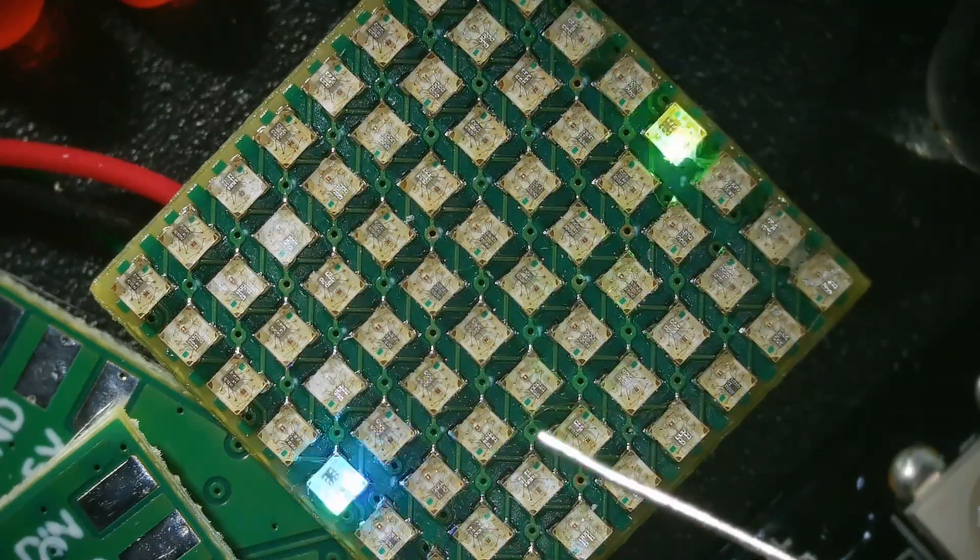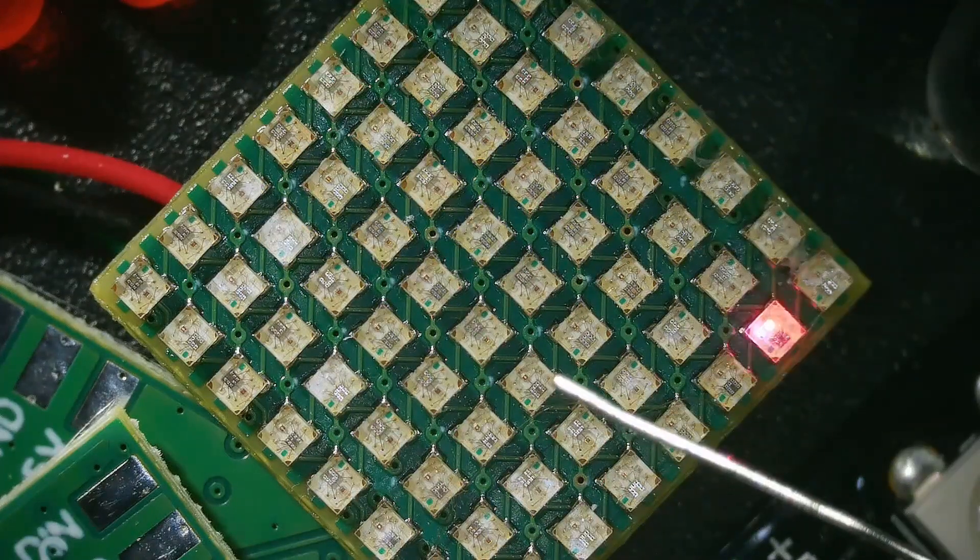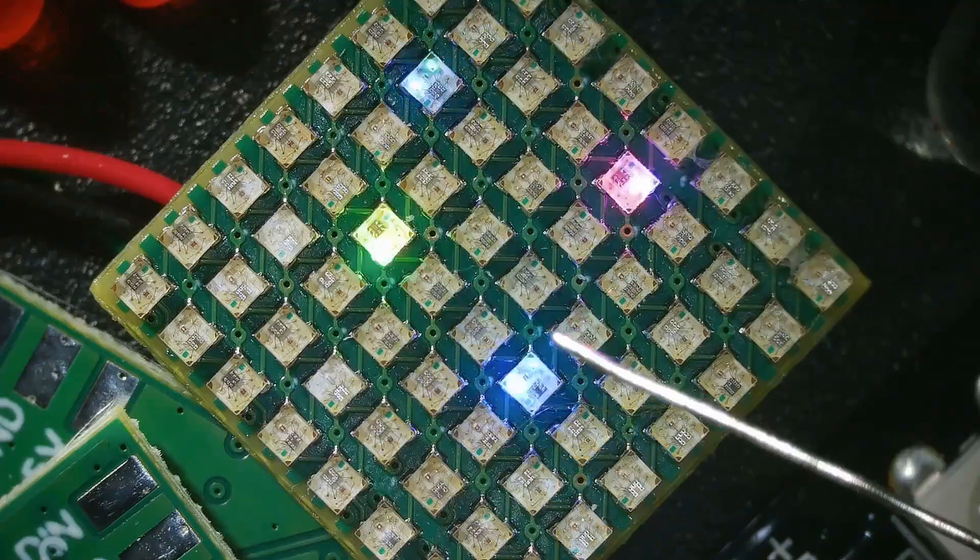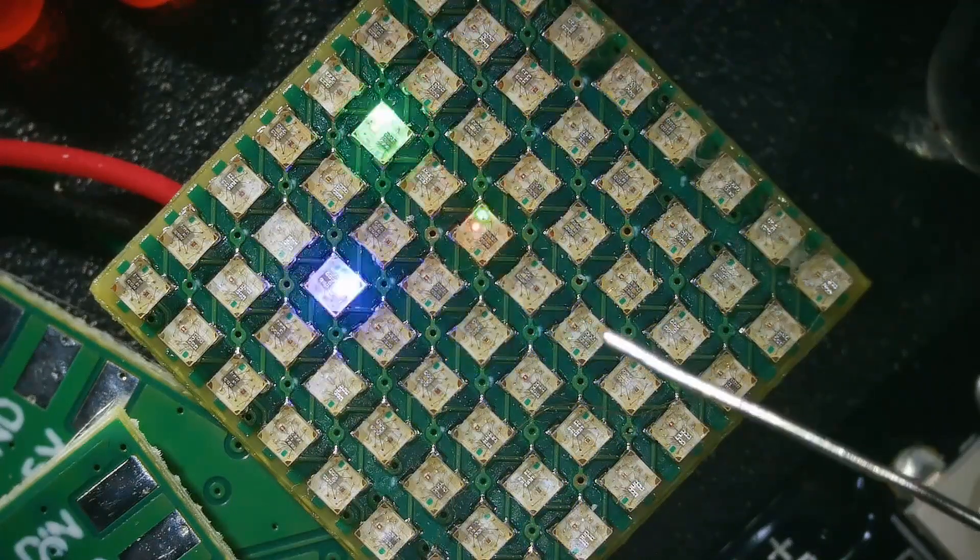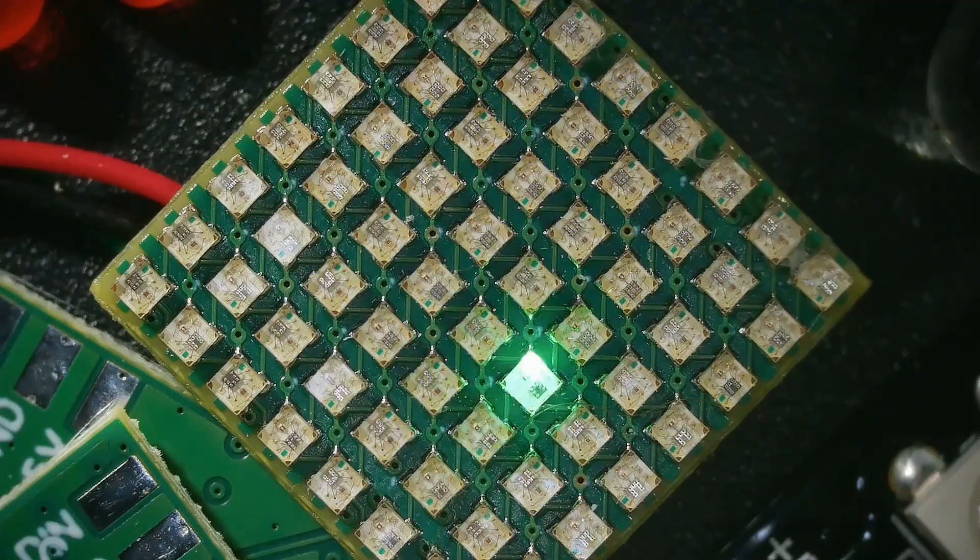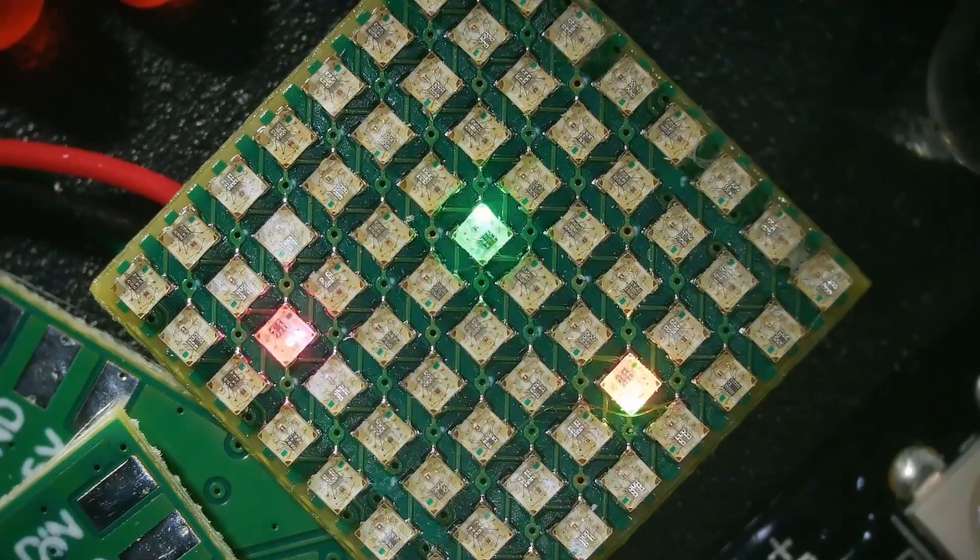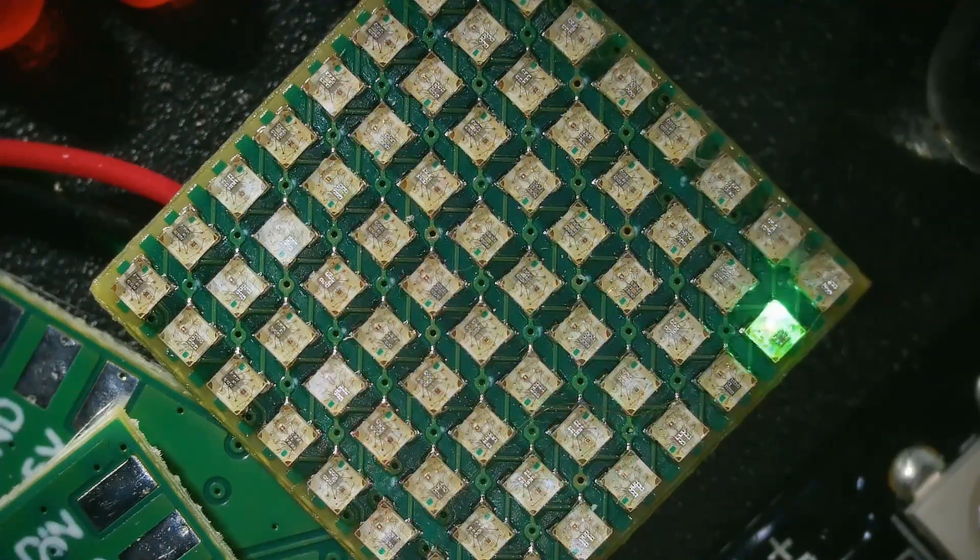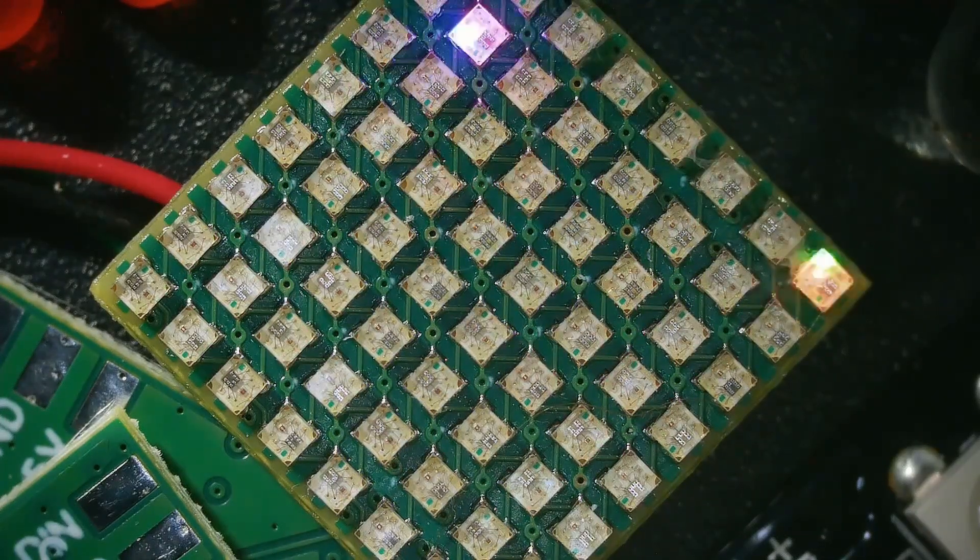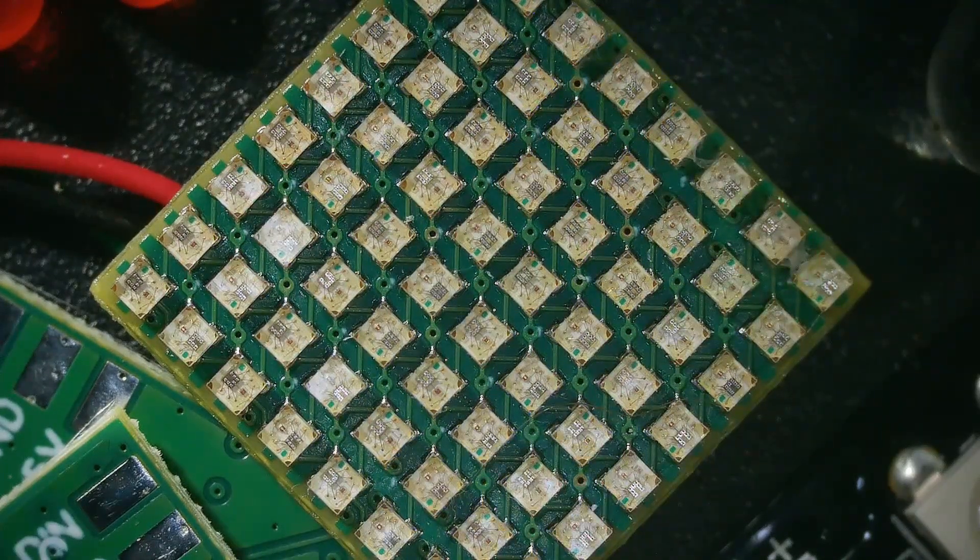These are where the vias are - that's going down to a lower layer and picking up either ground or positive. These are the traces. This is probably the data out, it goes to here data in, then data out here, data in here. Almost all, actually I think all the traces are on the top layer pretty much. There's one on the very back.